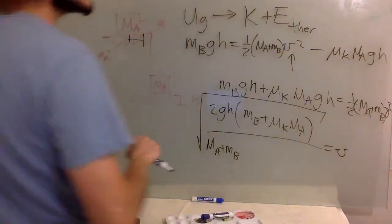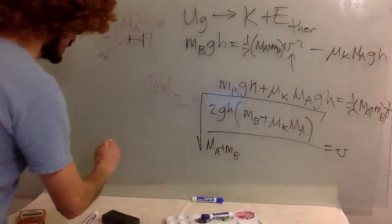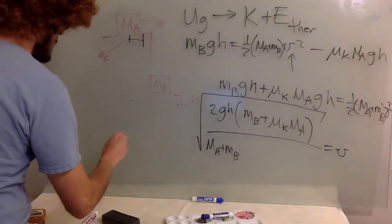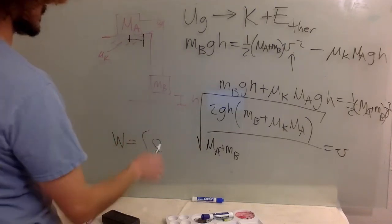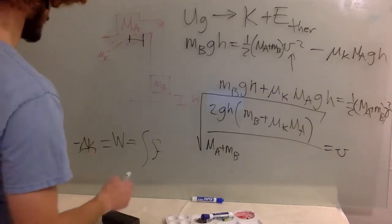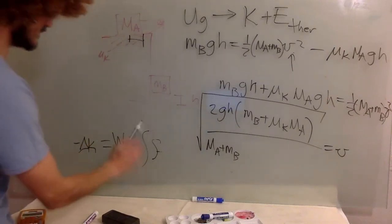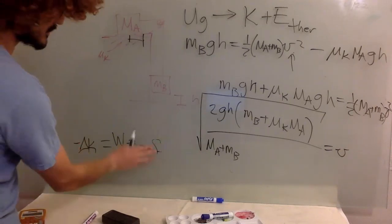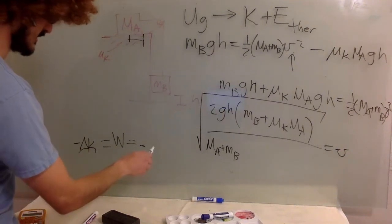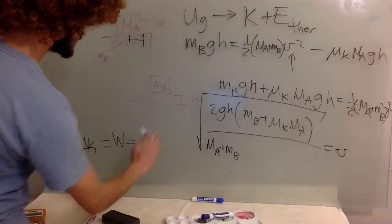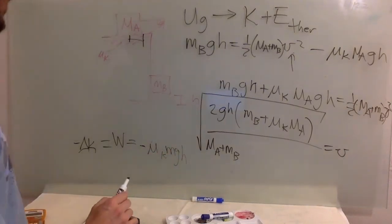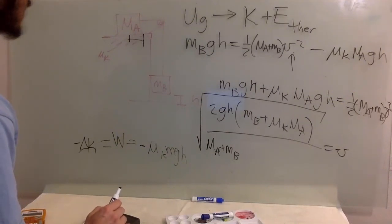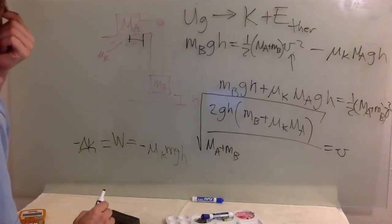It has to be negative because it is subtracting from the total potential energy. Oh, I know. So we got the work done by friction, and this is a very tricky part of physics in general.